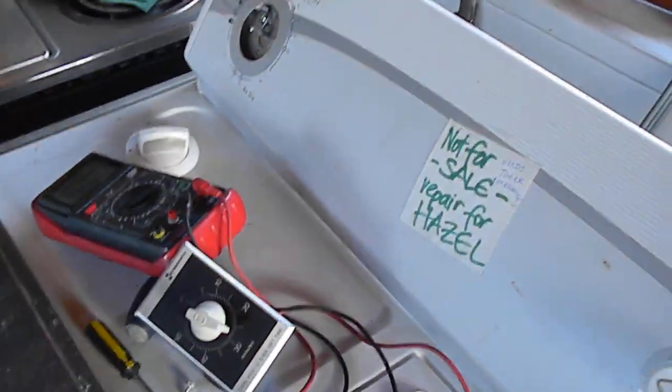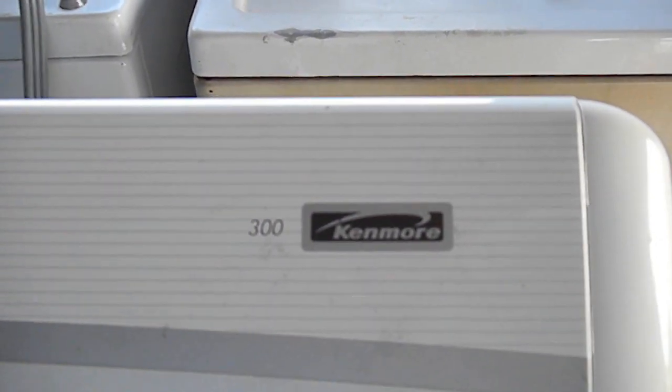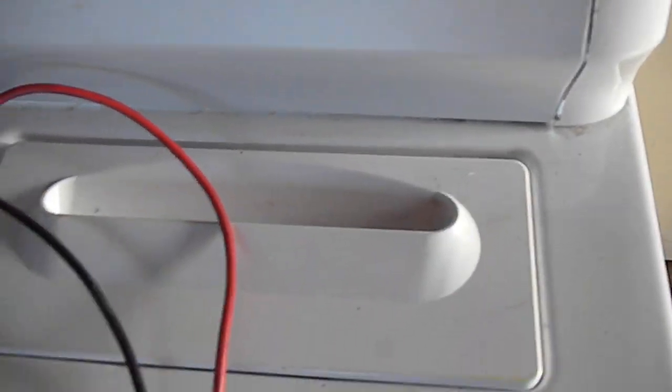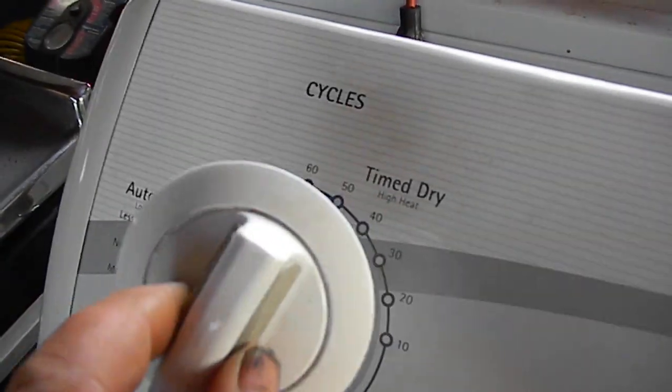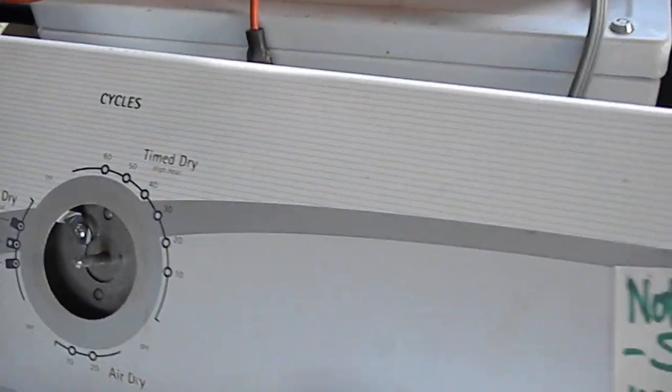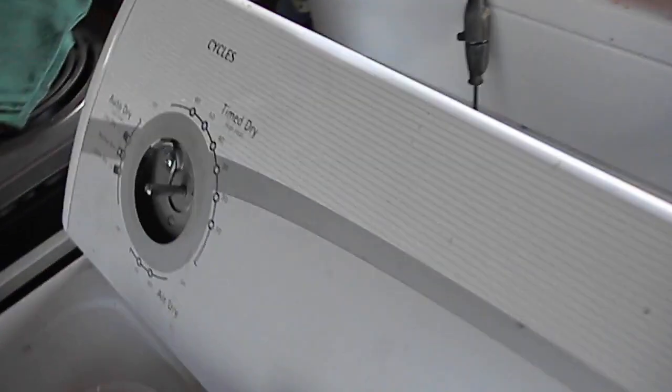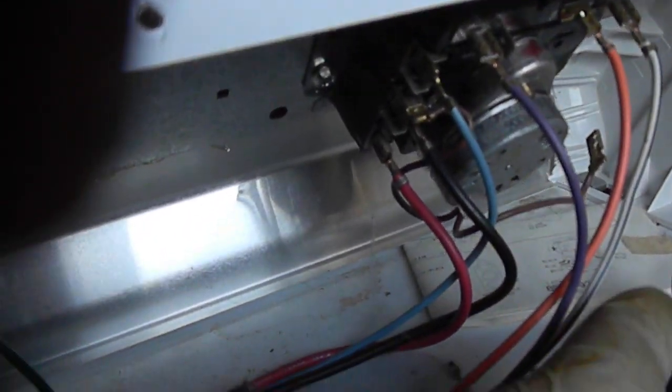Today we're working on a Kenmore 300 series electric dryer. The timer is not advancing - the knob does not move ahead. First thing you want to do is check and use your precautions here. I recommend you get a qualified technician to do this if you don't have any experience.